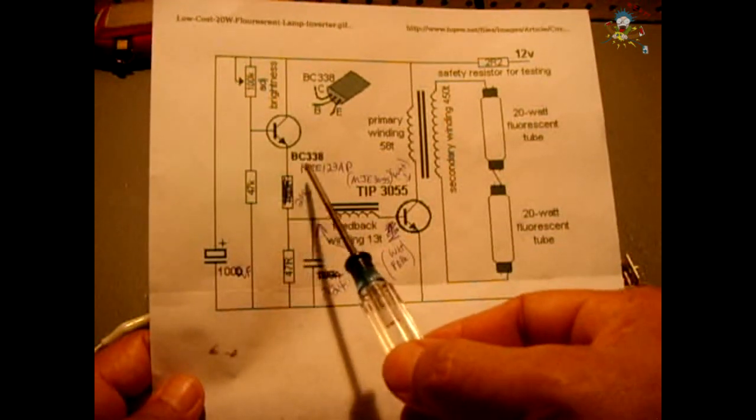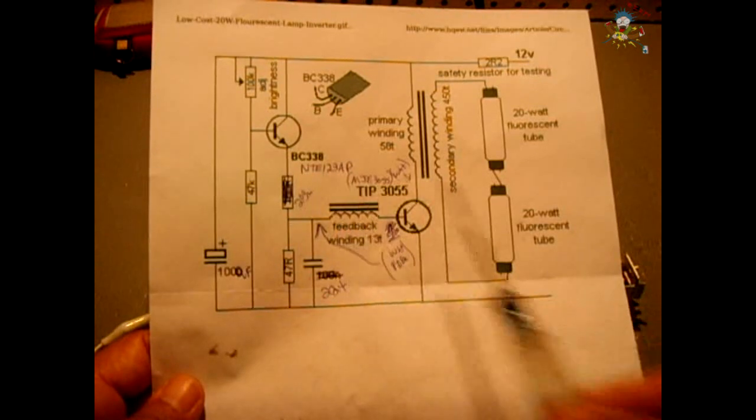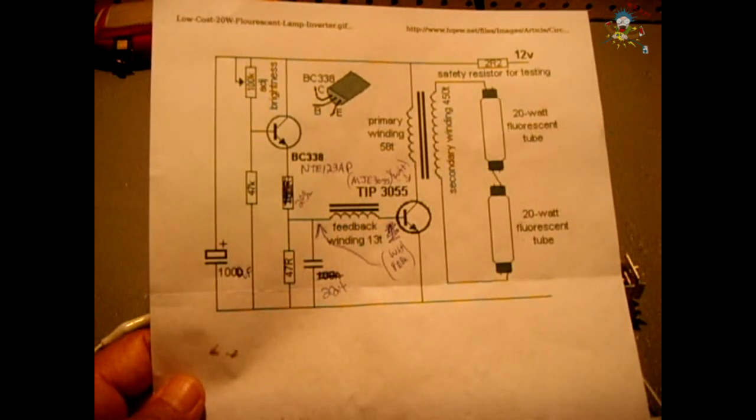You also have a BC-338. You can use an NTE-123AP, or you can use what I did, a 2N4401. All of them work fine.